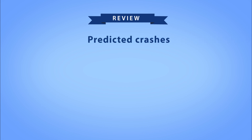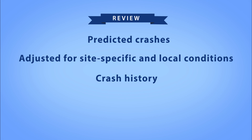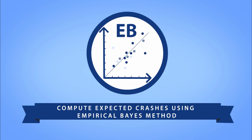At this point, you have estimated the predicted crashes for your site based on the average annual safety performance of other sites with similar characteristics, adjusted for site-specific and local conditions. However, this prediction does not consider the crash history, which can help you account for site-specific characteristics not reflected in the adjustment or calibration factors. In the final step, when appropriate, you can employ the Empirical Bayes or EB method to combine the observed crash history with the predicted crashes.